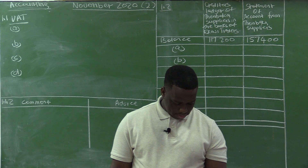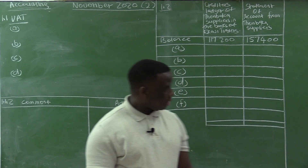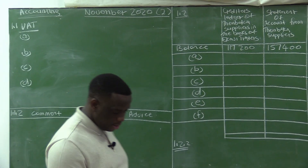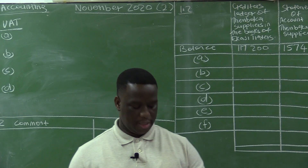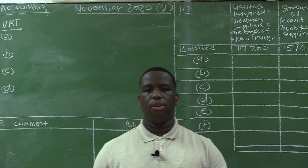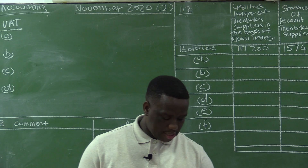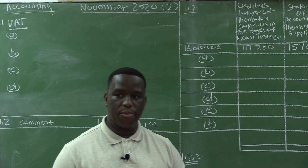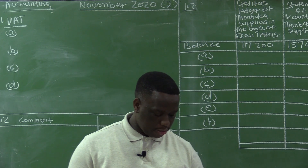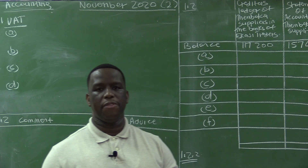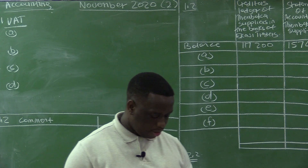Question 1 is 25 marks and it is based on VAT and creditors reconciliation. Section 1.1 is based on VAT and 1.2 is creditors reconciliation. VAT is value added tax — it is tax charged on the supply of goods and services. VAT is not charged on all goods; some goods are VAT-exempted, some are zero-rated, and others are standard-rated. Standard-rated goods are charged VAT at 15%, and only VAT vendors are allowed to charge VAT.